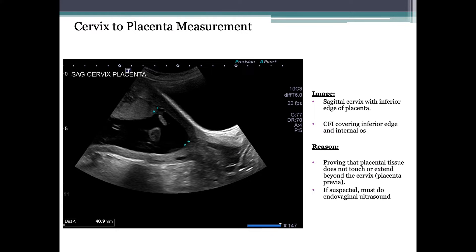Moving on to the cervix-to-placenta measurement: demonstrate a sagittal view of the internal os of the cervix and its relationship to the inferior edge of the placenta. Use colour flow imaging to show there are no fetal vessels overlying the internal os. This proves that placental tissue does not touch, overlie, or extend beyond the cervix — that would be placenta previa. A low-lying placenta, when the inferior edge is less than two centimeters from the internal os, will often resolve as pregnancy progresses due to growth in the lower uterine segment. Placenta previa poses significant risk should the patient go into labour and must be followed up and managed by the physician.